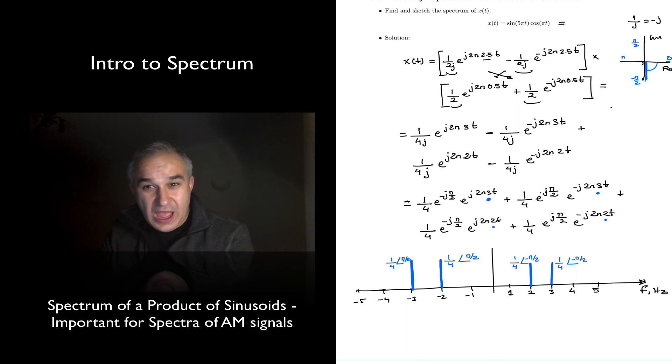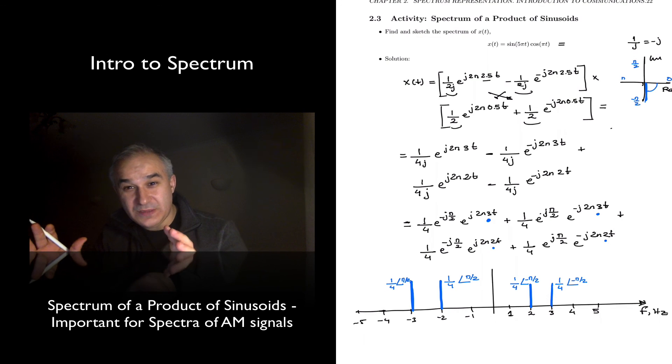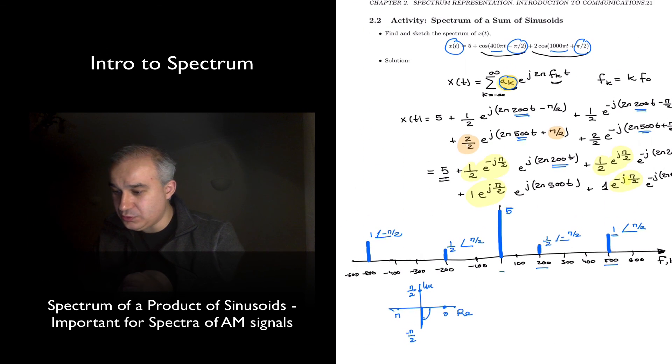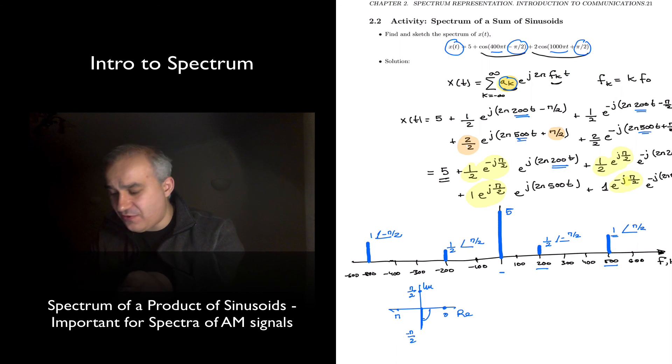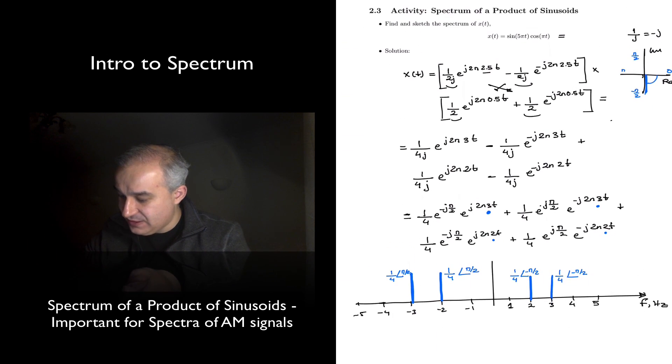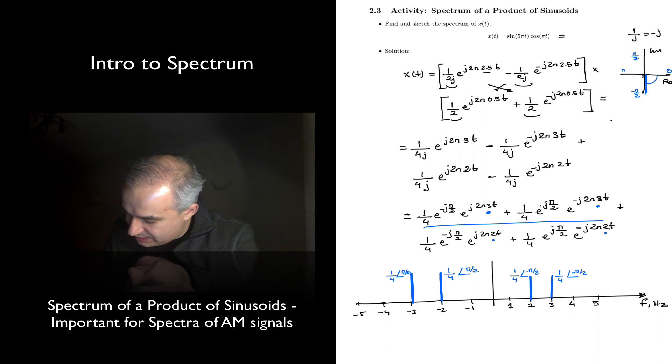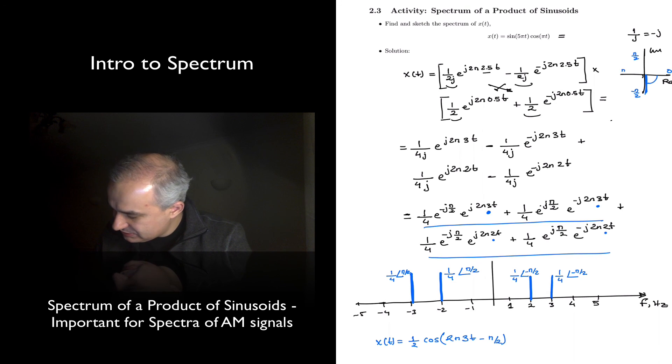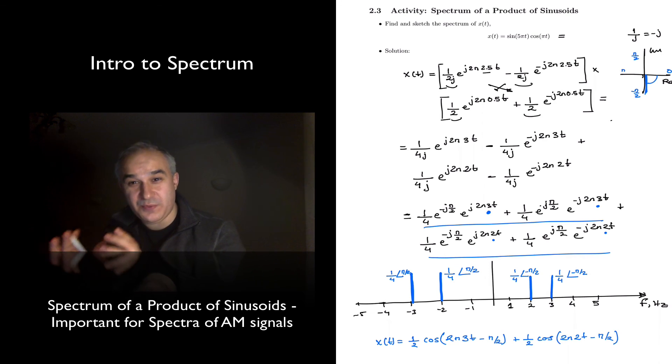How do we do that? Basically transforming the multiplication of those sinusoids into a problem like the previous problem, a sum of sinusoids, using the inverse Euler formula. In fact, what you see here is just x of t equals 1 half cosine of 2 pi 3t minus pi over 2, plus 1 half cosine of 2 pi 2t minus pi over 2. And we are in the previous activity.